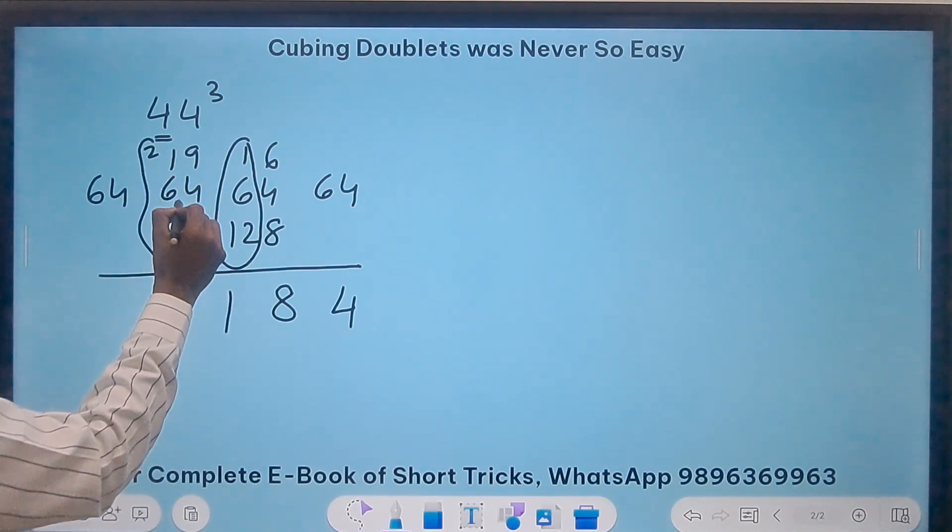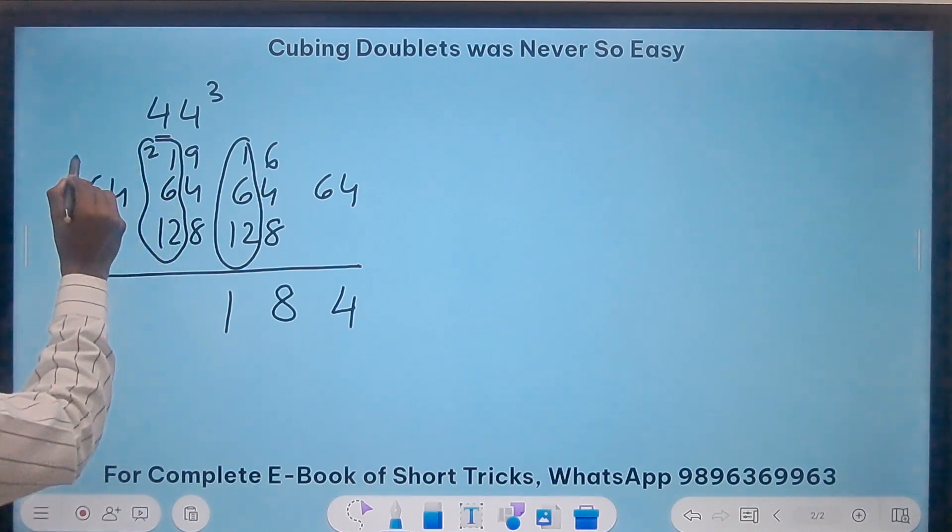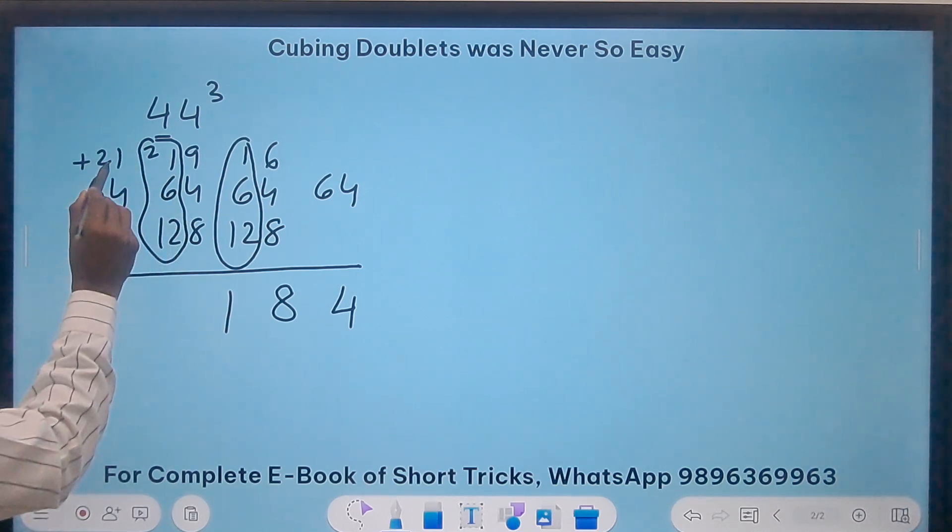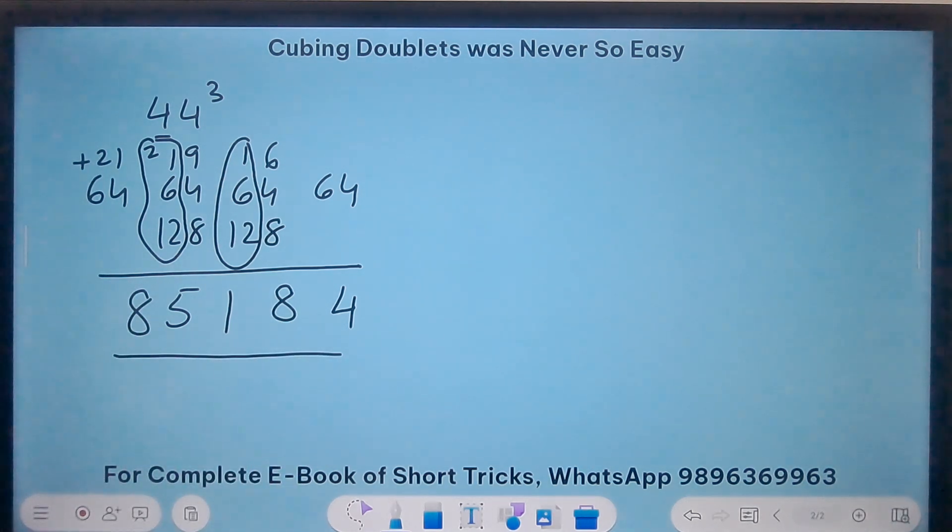Which comes here. Now 9 plus 4, 13 plus 8, 21, 1. And a 2 carry. So this part will be my carry forward number. 12 plus 6, 18, 19, 21. So I carry forward the 21 here. So this becomes 5. And this becomes 8. 8, 5, 1, 8, 4. That is the cube of 44.